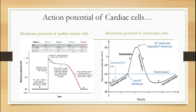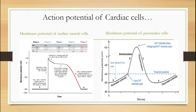In conducting cells, phase 4 is unstable. After repolarization, phase 4 generates a slow spontaneous depolarization — this is because slow inward sodium channels open, causing a gradual influx. Then suddenly calcium channels open, causing calcium influx and depolarization, which is phase 0 in pacemaker cells, reaching a peak of about 20 mV — driven mainly by calcium channels rather than sodium.